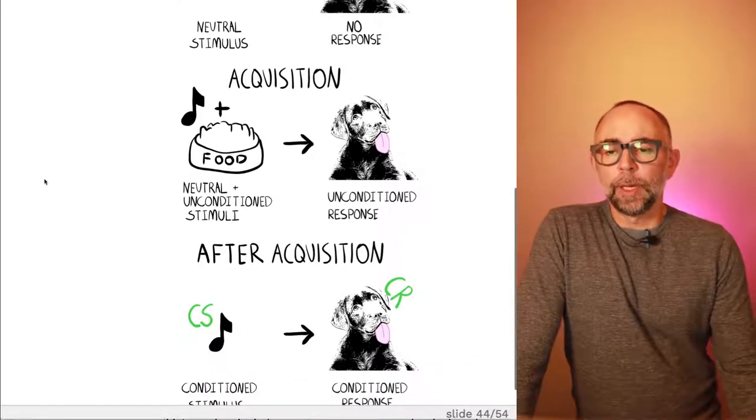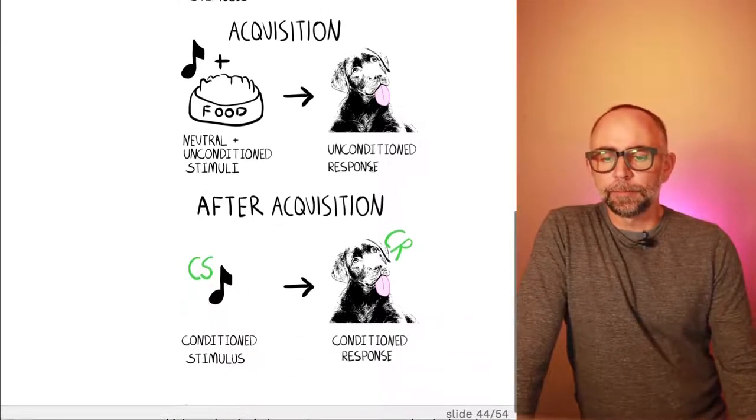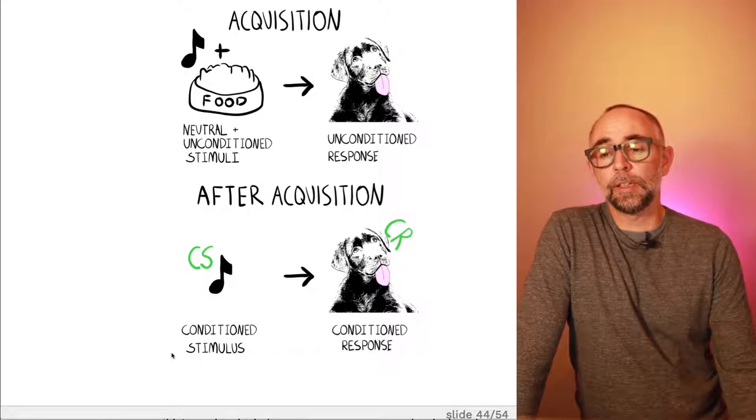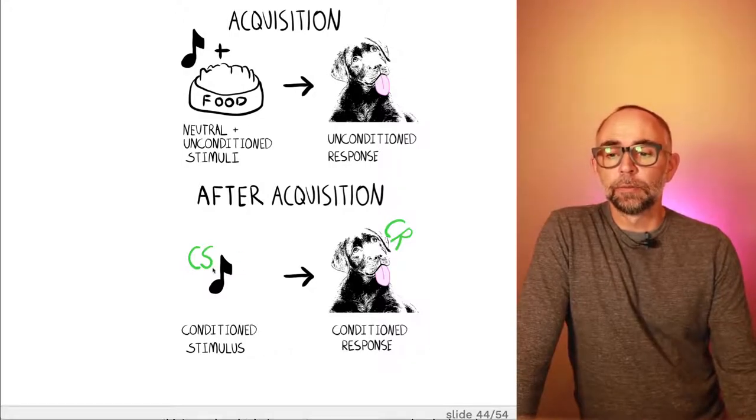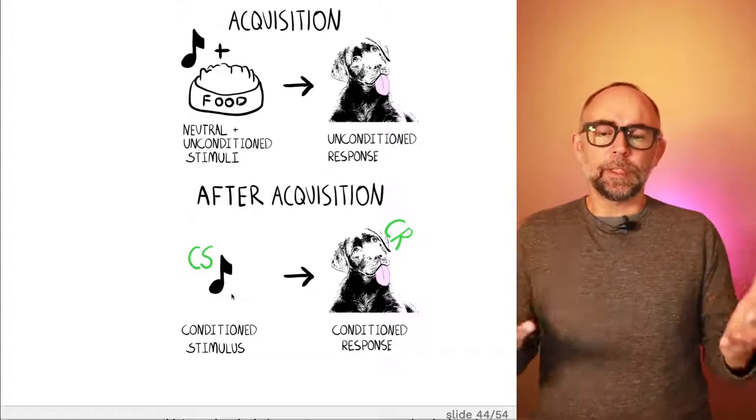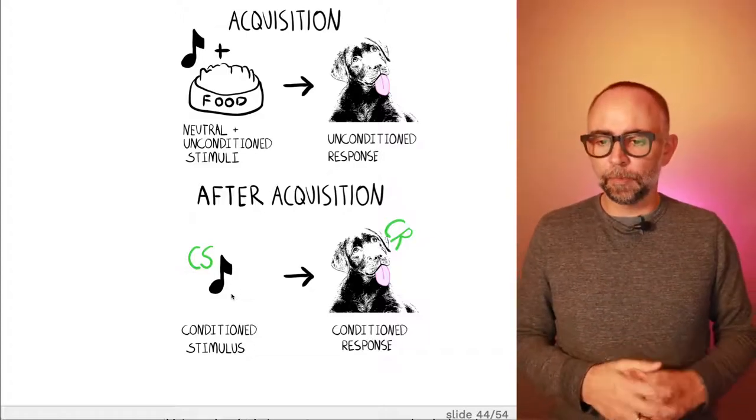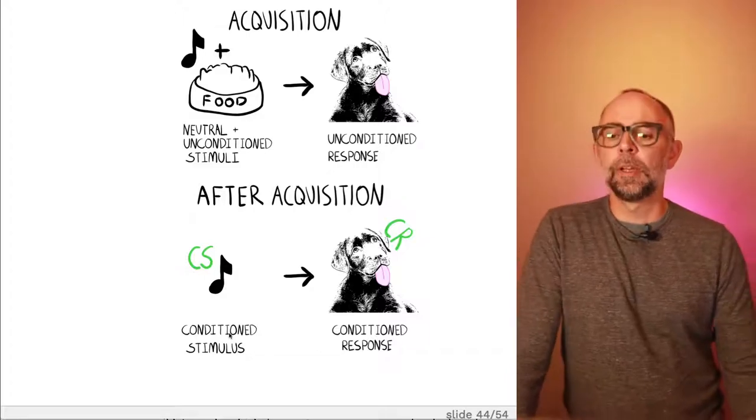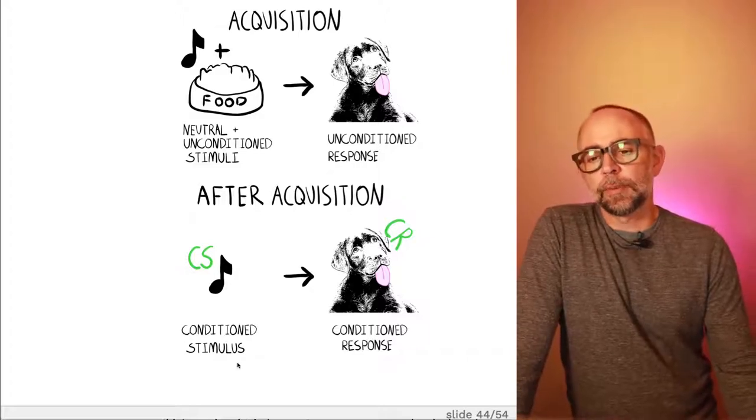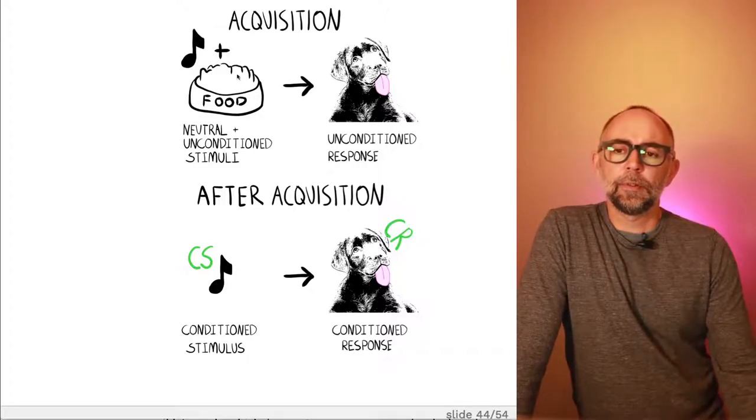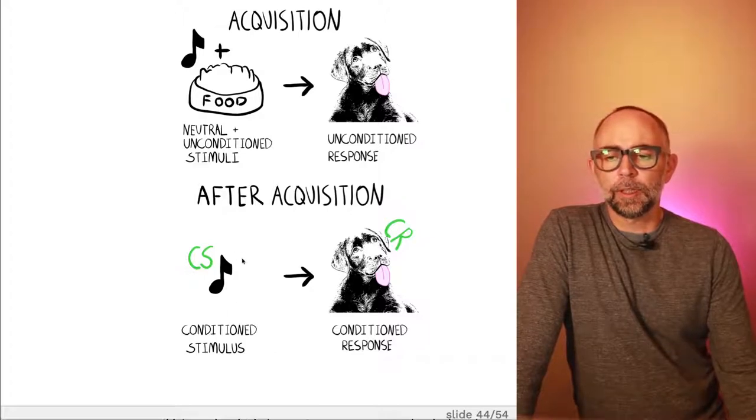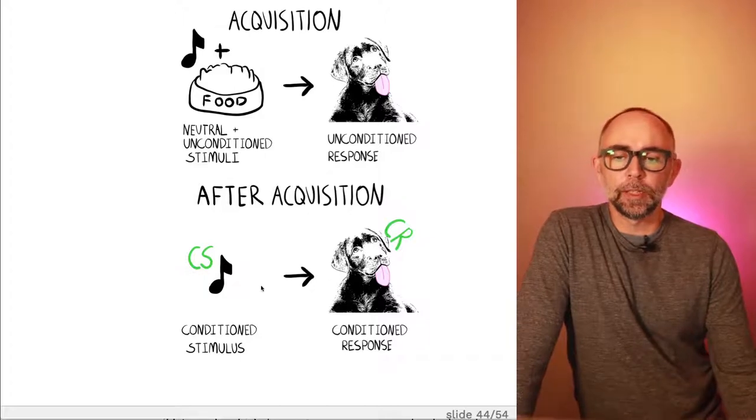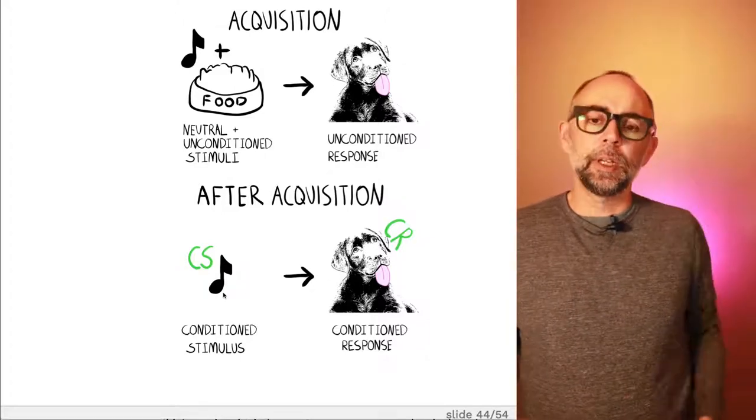Now, after a bunch of repeated pairings, this is the interesting thing that happens called classical conditioning. The tone that was previously neutral, it previously didn't do anything to this dog. It has changed. It is no longer a neutral stimulus. We'll call it a conditioned stimulus. And why do we call it that? Because after the acquisition phase, this tone will actually elicit the conditioned response. That is, when the dog hears the tone, it will start salivating.